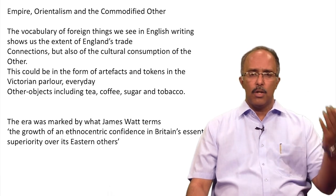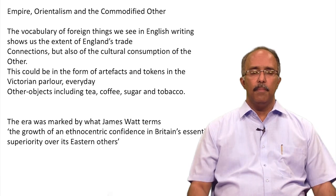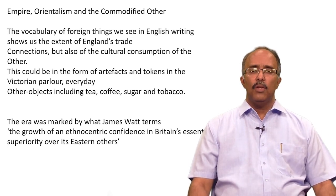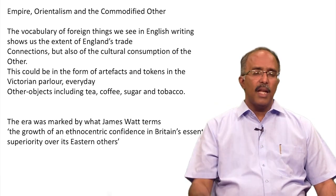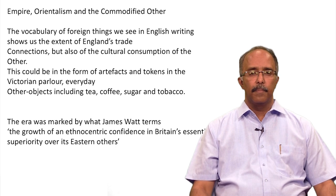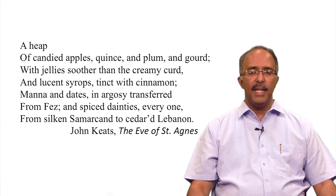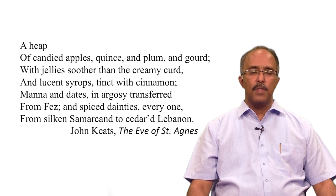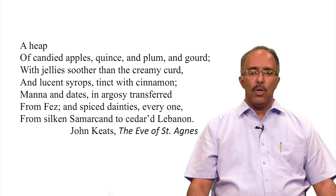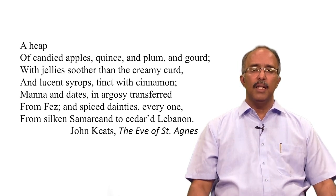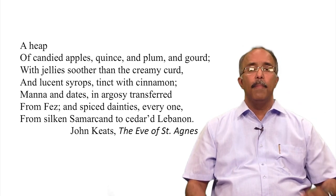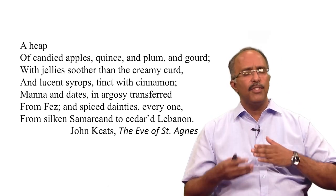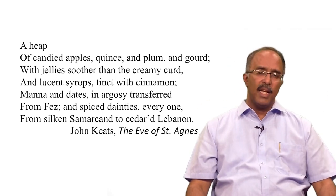There is consumption in terms of artifacts and tokens in the Victorian parlour — everyday objects like tea, sugar, coffee, tobacco which come from elsewhere. As James Watt writes, this leads to the growth of an ethnocentric confidence in Britain's essential superiority over East and others. An instance of this can be seen in John Keats's poem The Eve of Saint Agnes: 'A heap of candied apples, quince and plum and gourd, with jelly smoother than the creamy curd, and lucent syrups tinct with cinnamon, manna and dates, in argosy transferred from Fez, and spiced dainties, every one, from silken Samarkand to cedared Lebanon.' You will see parallels with Alexander Pope's The Rape of the Lock, where there is also a categorisation and inventory of things which have come from different parts of the world.